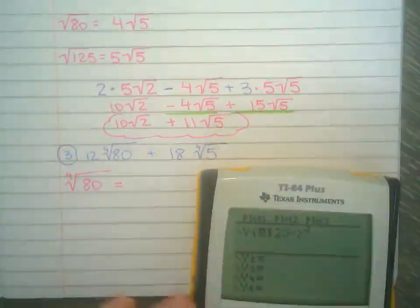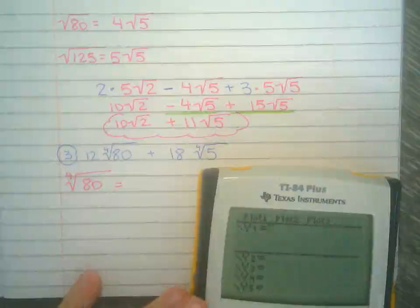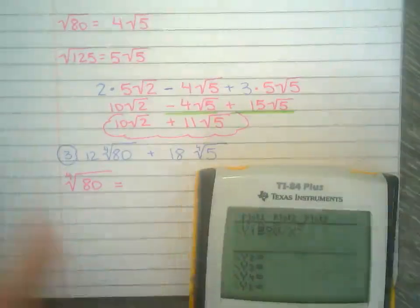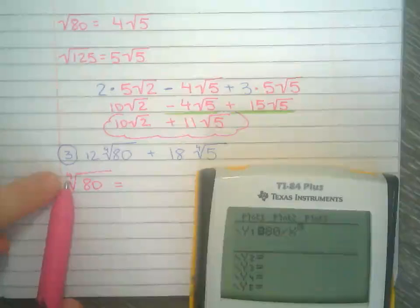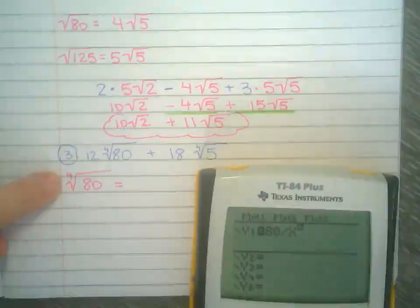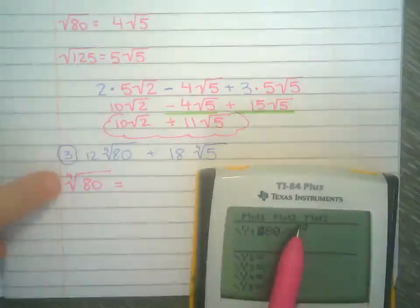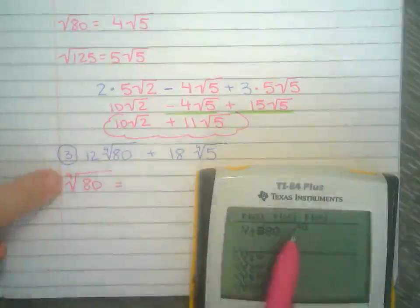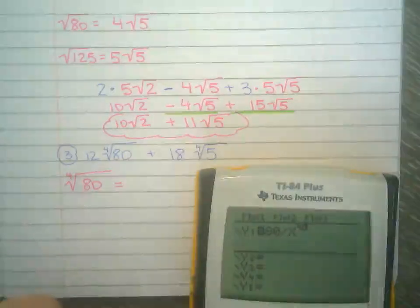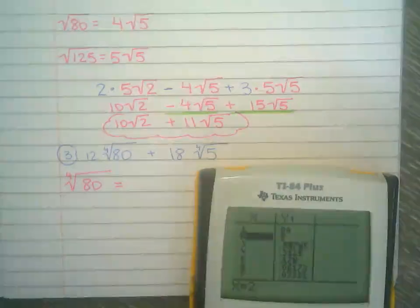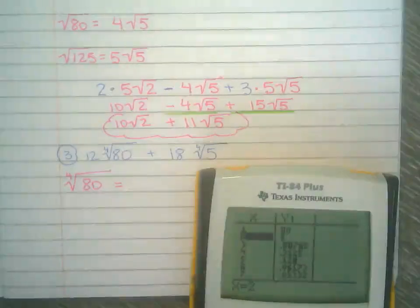Like the trick from a couple videos ago, I can still go to y equals, plug in 80 divided by x, but this time the index is 4, so my exponent that I'm dividing by right there has to be 4. Index is 4, exponent is 4. Ah, looky there. So it's going to be 2 times the 4th root of 5.